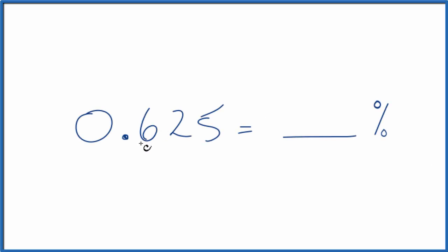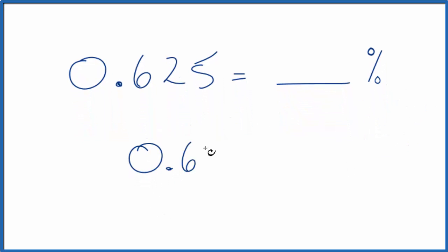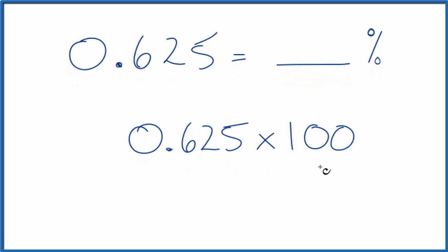Let's write the decimal 0.625 as a percent. The quick way to do this is to take 0.625 and multiply that by 100. When we do that we end up with 62.5. So the decimal 0.625 as a percentage is 62.5%. Here's why that works.